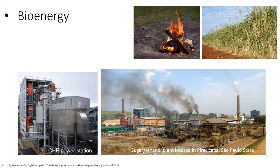Bioenergy produced at industrial scale for commercial purposes needs a power station or power plant. Here is shown a CHP power station using wood to supply 30,000 households in France. Another picture shows a sugar ethanol plant located at Piracicaba, São Paulo state in Brazil. This plant produces the electricity it needs from the gas residuals from sugarcane left over by the milling process, and sells the surplus electricity to the public grid.